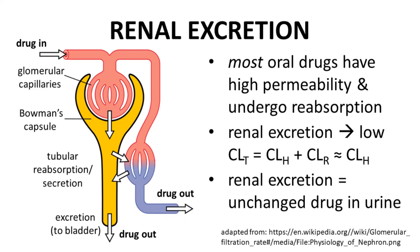Therefore, hepatic clearance is often the main driver for total clearance. If a drug is renally cleared, it will appear unchanged, unmetabolized in the urine. Evidence for renal clearance is first apparent during preclinical in vivo PK studies, during which unchanged drug is detected in an animal's urine. Note that while the high membrane permeability of oral drugs minimizes renal excretion, drug metabolites, which are normally much less permeable because of conjugation with polar groups, do undergo renal excretion.